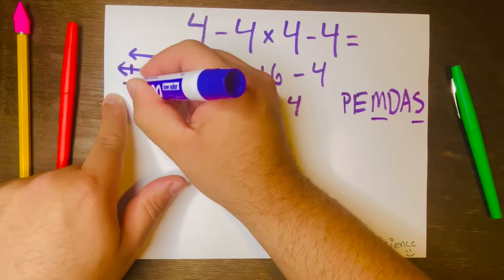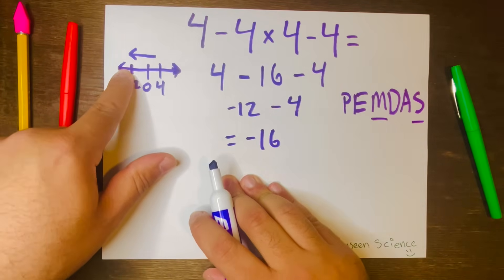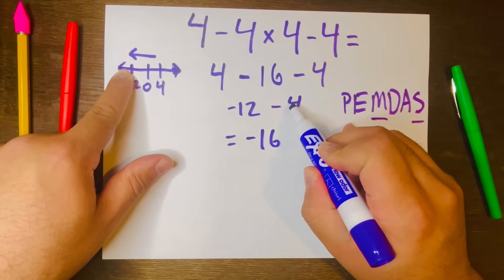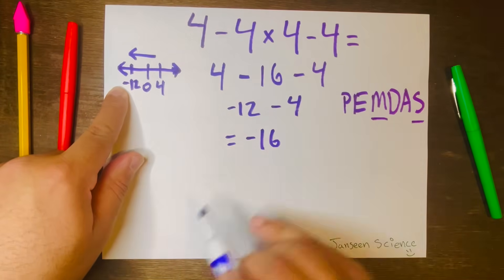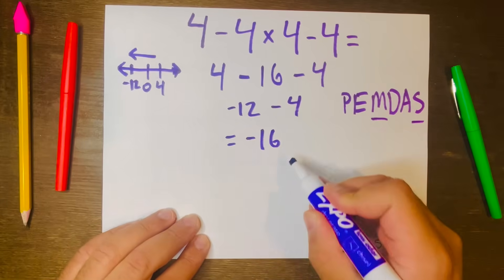Or if you stop at negative 12 and you need to go another four units to the left, you'll stop at negative 16.